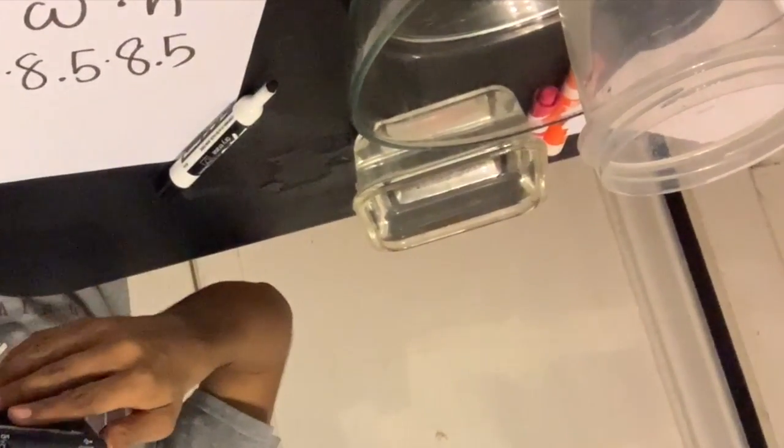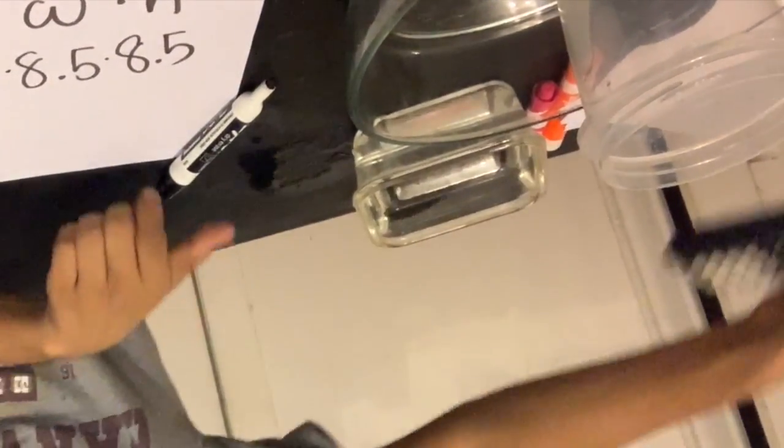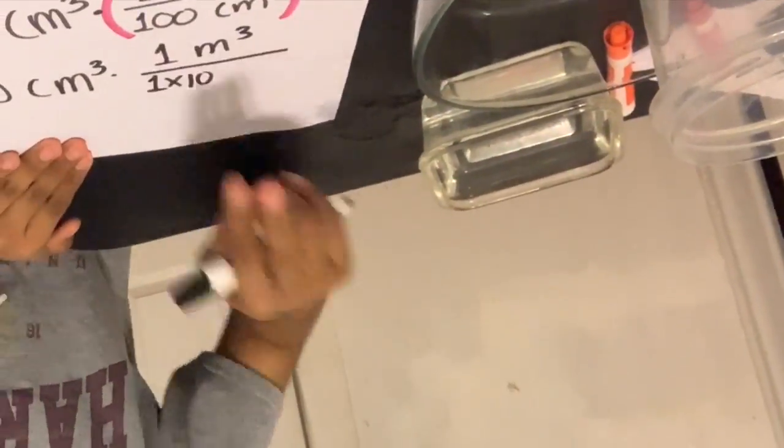So my volume is length times width times height: 8.5 times 8.5 times 8.5. I got 640 cubic centimeters, which equals 6.4 times 10 to the negative 4 cubic meters. Very good — now you have to show me this using the scale.